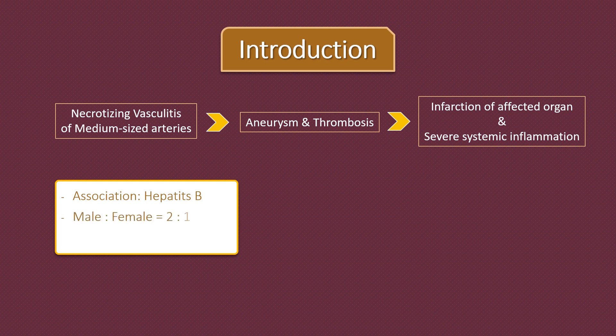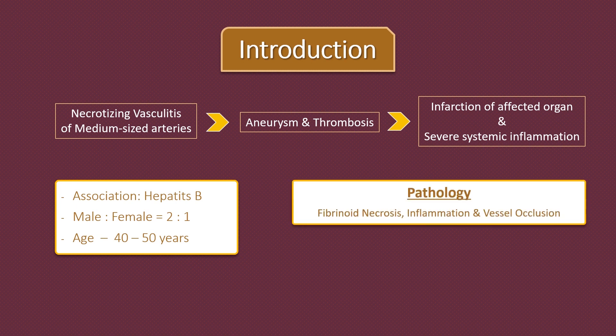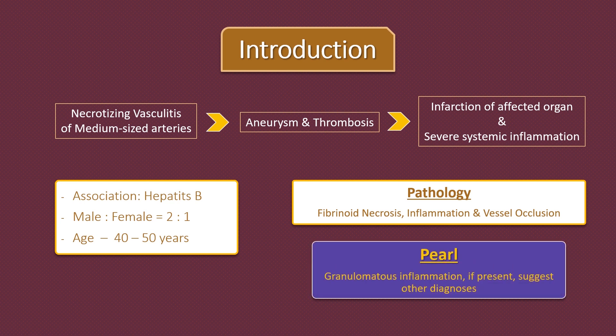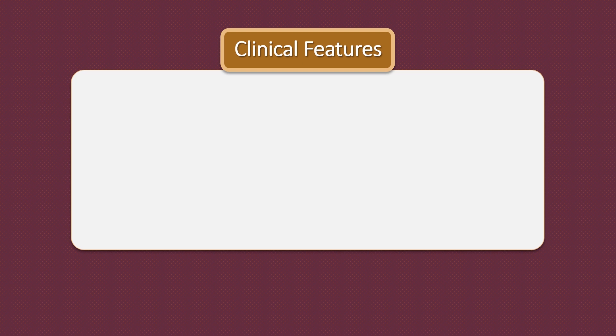The male to female ratio is 2:1, and polyarteritis nodosa has a peak incidence between the ages of 40 and 50 years. Pathological changes comprise necrotizing inflammation and vessel occlusion. Note that granulomatous inflammation does not occur in polyarteritis nodosa, and its presence suggests other diagnoses.